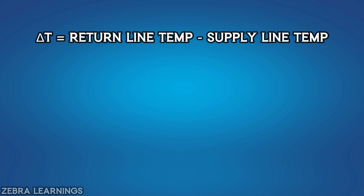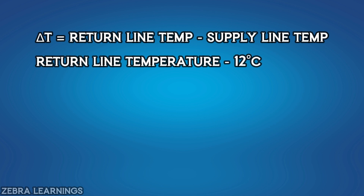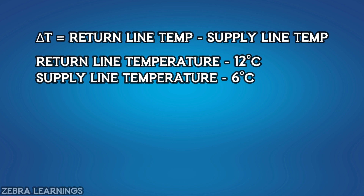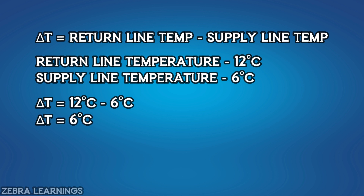To find delta T, we calculate the difference between return line temperature and supply line temperature. For example, if the return line temperature is 12 degrees Celsius and the supply line temperature is 6 degrees Celsius, the delta T difference is 12 minus 6, which equals 6 degrees Celsius. However, if you want to convert this reading to Fahrenheit, you should not simply convert the delta T answer to Fahrenheit. You should convert both the return and supply temperatures to Fahrenheit individually, and then calculate the difference.